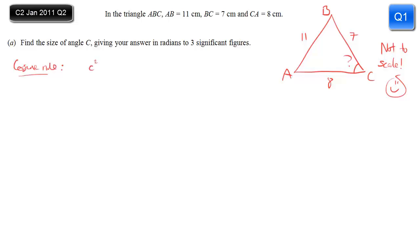So if we write it out, c² is equal to the two other sides, a² plus b², minus two lots of the same two sides, a and b, multiplied by cos of angle C. Angle C is what we want to find in this case, but we know everything else, so the simplest way is to substitute in.